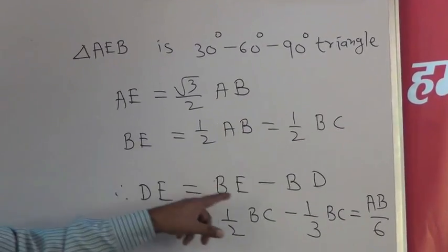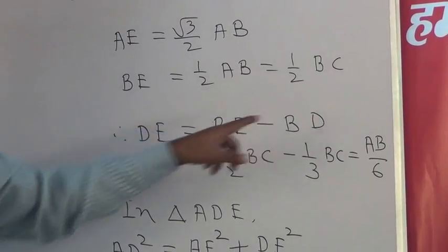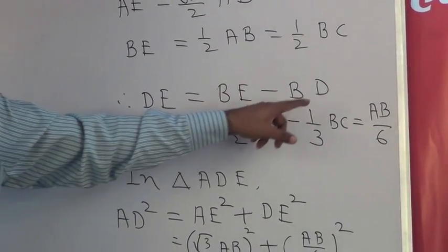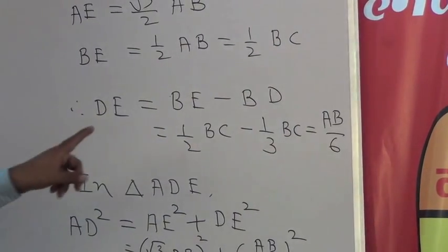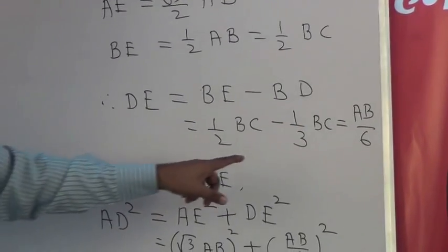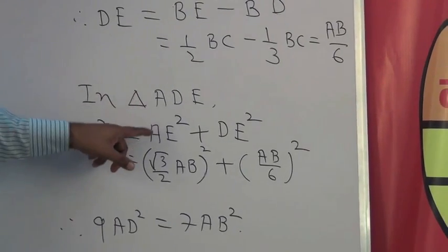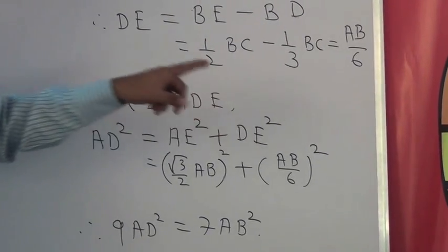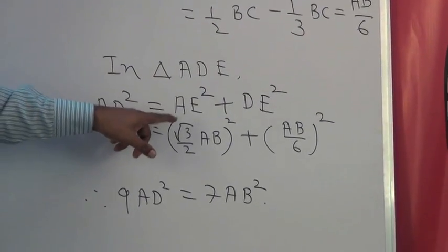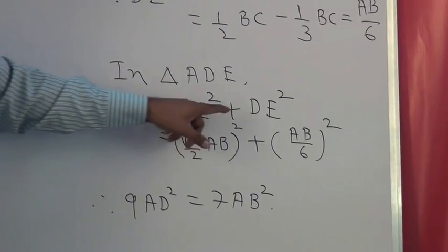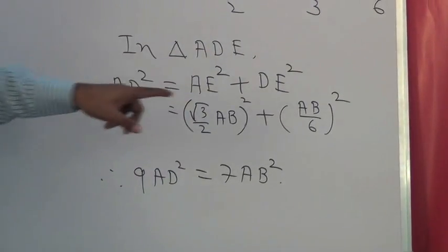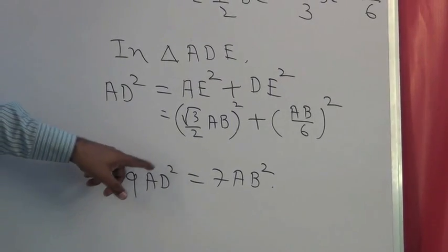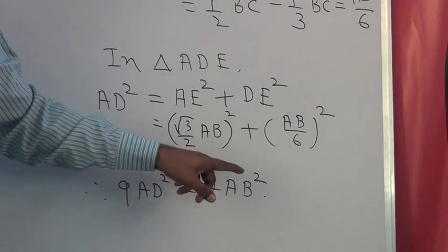So DE = BE - BD. After substituting these values, we get (1/2)BC - (1/3)BC, which is nothing but equal to AB/6. In triangle ADE, using Pythagoras theorem, we get AD² = AE² + DE². After re-substituting the values, we get (√3/2 AB)² + (AB/6)². After simplifying this, we get the result 9AD² = 7AB². Thus we have proved our given thing.